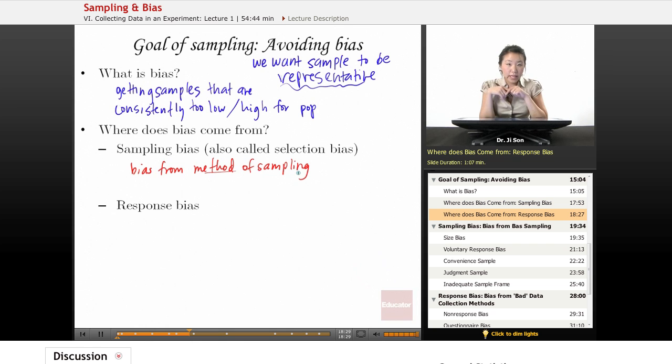The other way that you could get bias is actually sort of bad news, because even when you have a good sample, we have a good sample, you might still have bias. And that might be because of something like response bias.